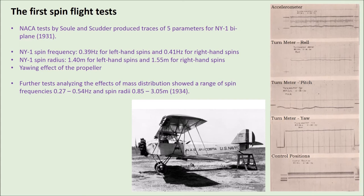Moving on a couple more years, NACA in the US were also performing tests. Sol and Scudder produced time histories of five parameters for an NY1 biplane — a US Navy biplane. This aircraft had a very similar spin frequency to the Bristol Fighter studied by Wright, at around 0.4 Hz for left-hand spins and slightly higher for right-hand spins. They also found that spinning to the left had a slightly tighter radius than to the right, which revealed the yawing effect of the significant wooden propeller and its moment of inertia.